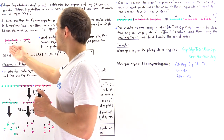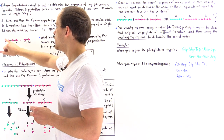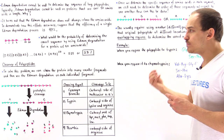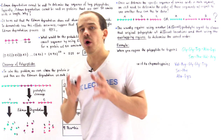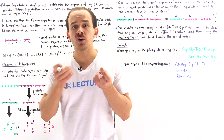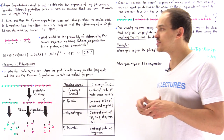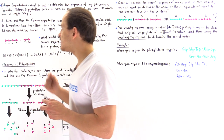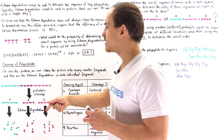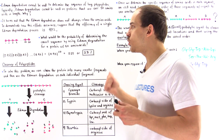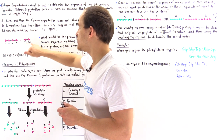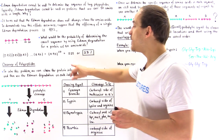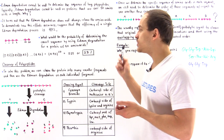Here we have our protein with amino acids numbered 1, 2, 3, 4, 5, 6, 7 — not all shown — all the way to 49 and then 50. If we carry out the Edman degradation on this entire polypeptide, what is the probability of obtaining the correct sequence? We simply multiply the individual probabilities: 0.97 for the first step, 0.97 for the second, 0.97 for the third, and so forth, all the way to the 50th step. So we have 0.97 to the 50th power, which gives us about 0.22 — a 22% likelihood.